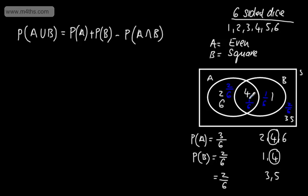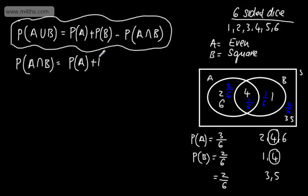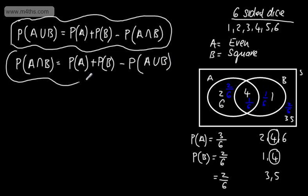If we subtract away one lot of the intersection — 1/6 disappears — we get 6 over 6. So the probability of A union B equals the probability of A plus the probability of B minus the probability of A intersection B. We can rearrange this: the probability of A intersection B equals P(A) plus P(B) minus P(A union B). You can manipulate the formulae like so.